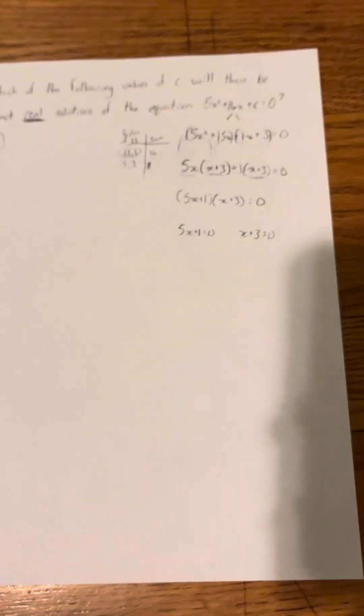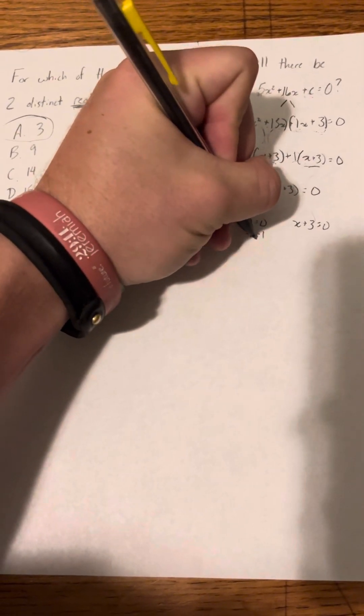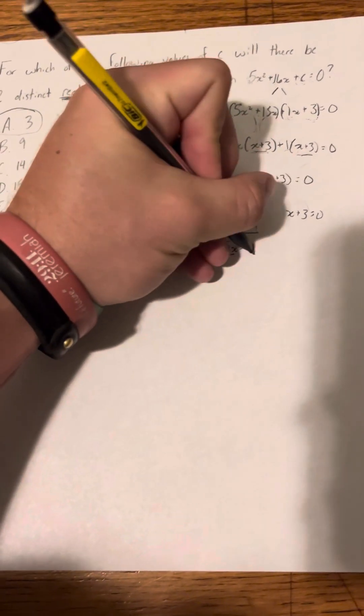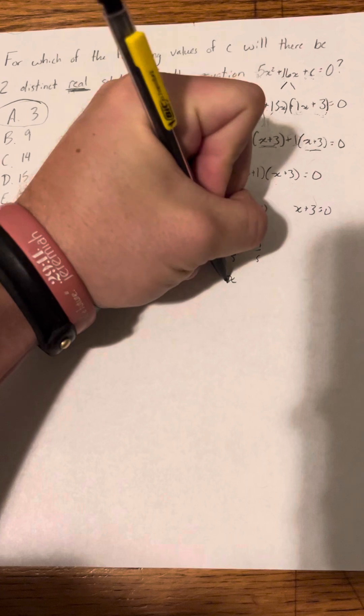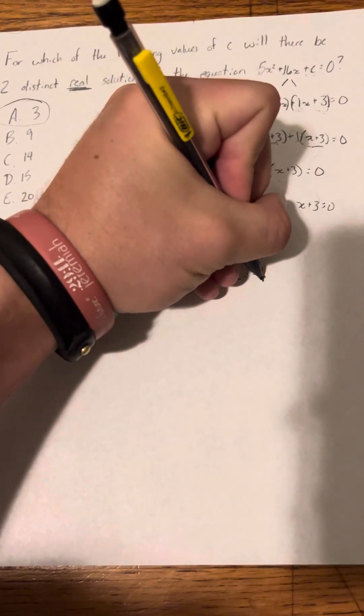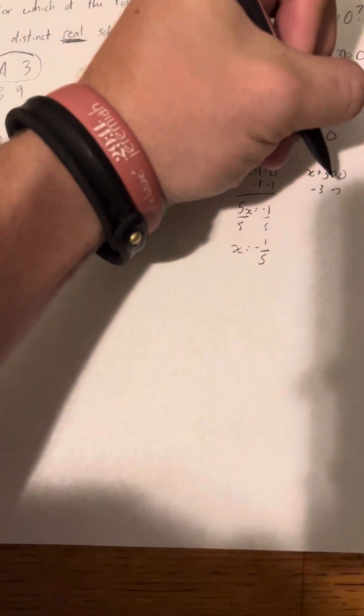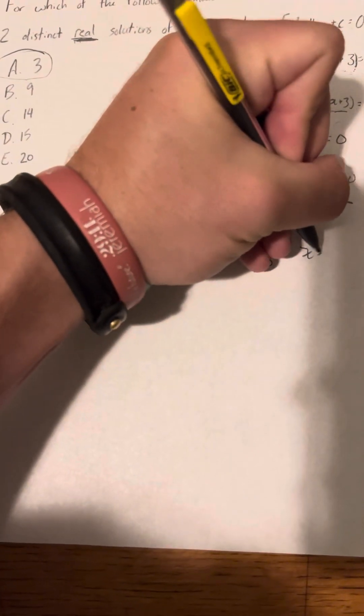Okay, so now we solve them. So this one, I would subtract 1, subtract 1, 5x equals negative 1, divide by 5, x equals negative 1 fifth. And then I solve this one, minus 3, minus 3, x equals negative 3. So these are my two solutions.